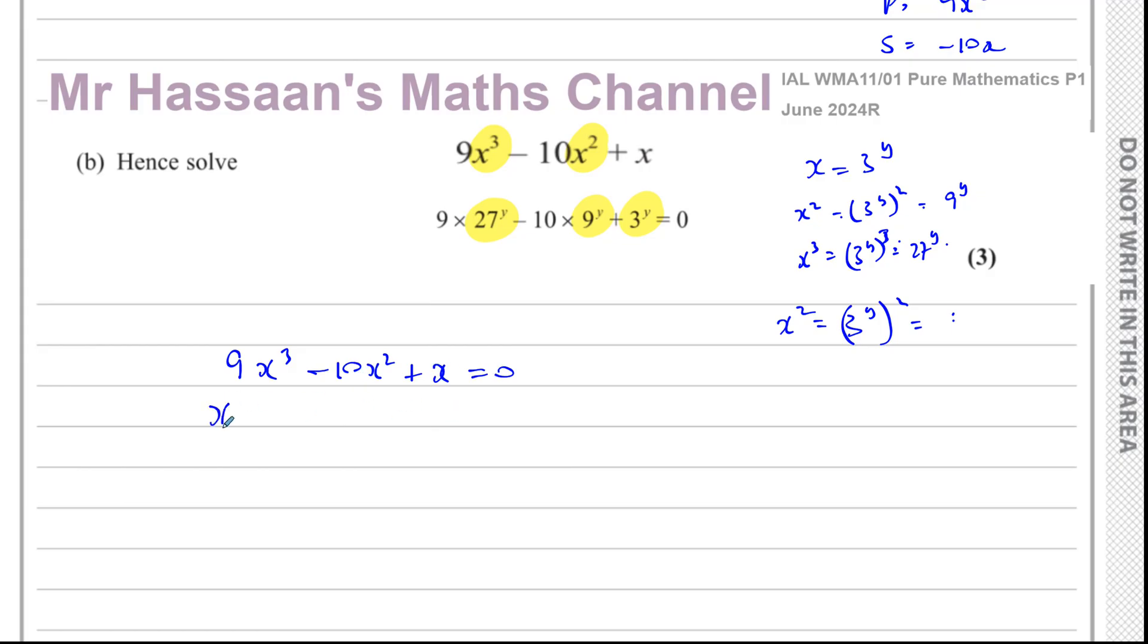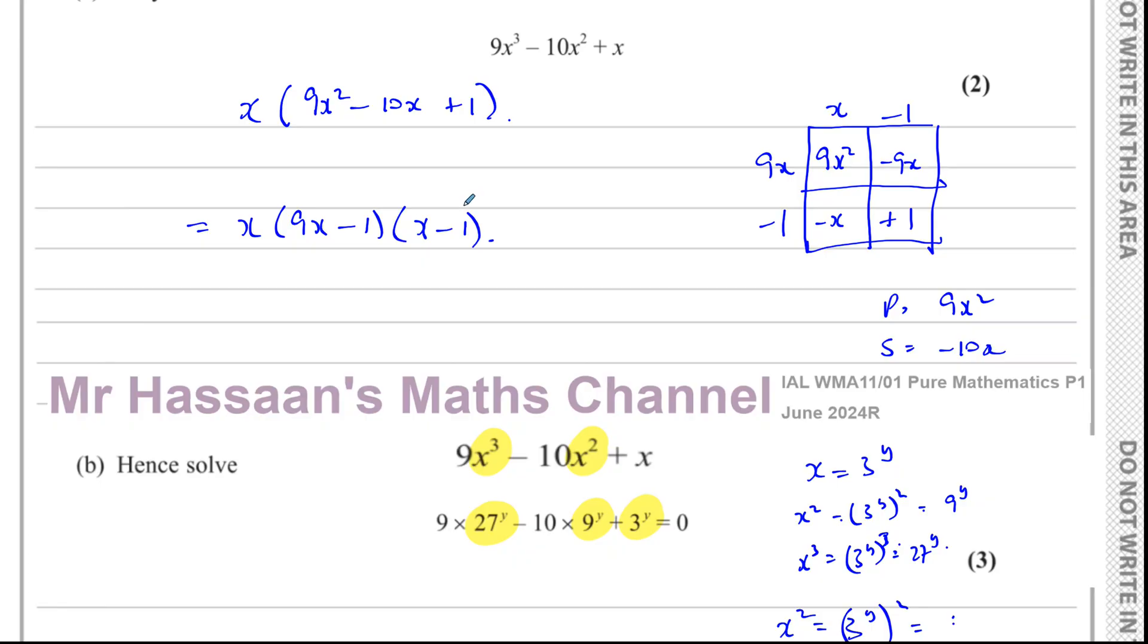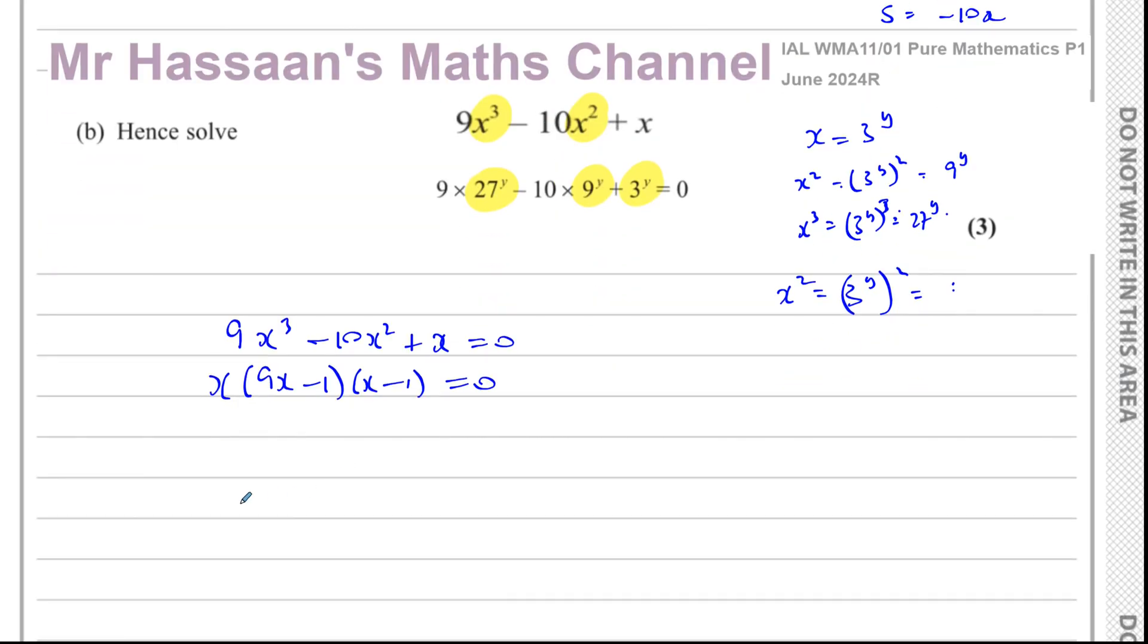And we already factorize this as x times 9x minus 1 times x minus 1 equals 0. We just factorize that there. And that's where the hence comes in. So now we can say either x equals 0 or 9x equals 1 or x equals 1. So x equals 1 over 9 and x equals 1.